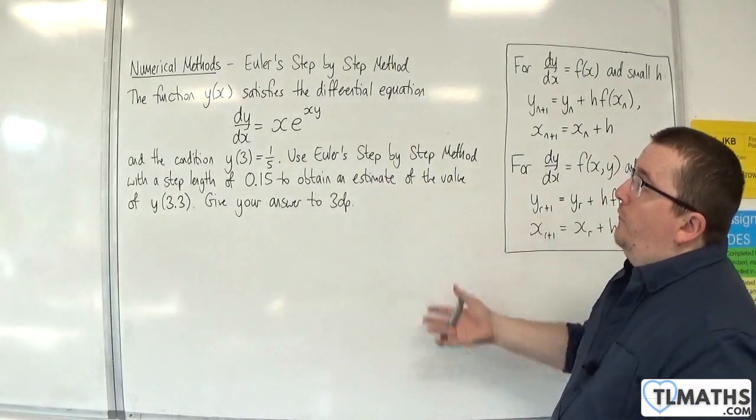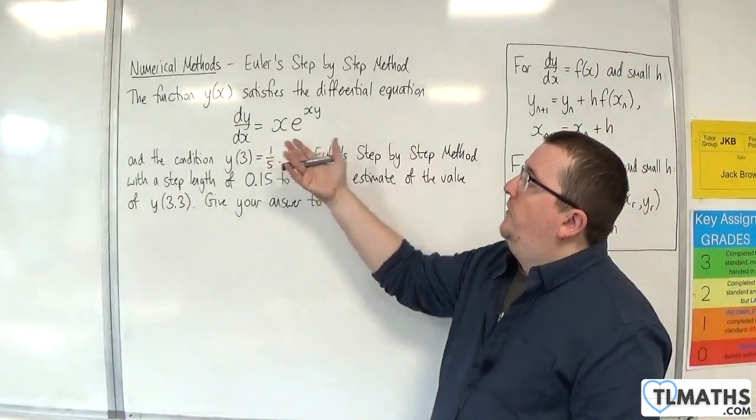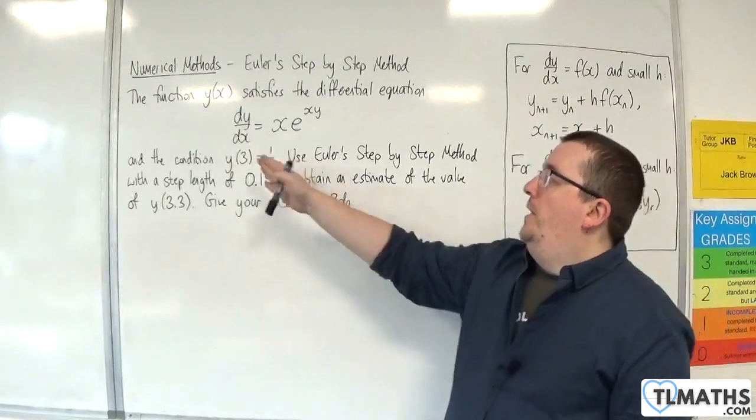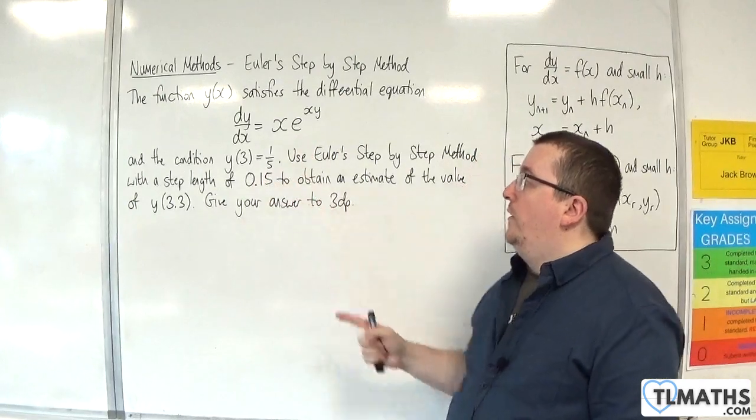So in this question, we have the function y of x satisfies the differential equation dy/dx is equal to x e to the xy. And the condition y of 3 is equal to 1/5. So when x is 3, y is 1/5.